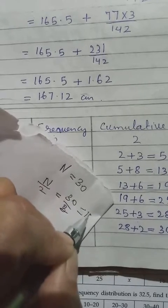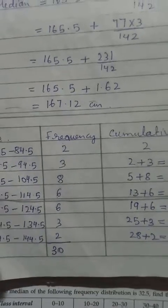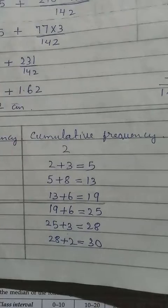So from the cumulative frequency, we have to check where is that 15. So see, if you don't get exactly 15, you can take greater than.